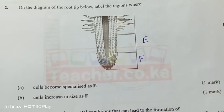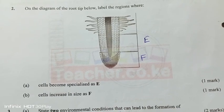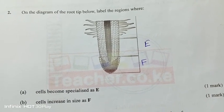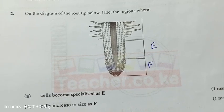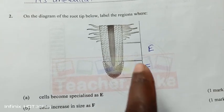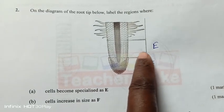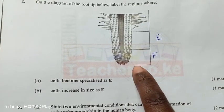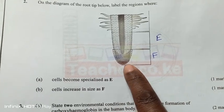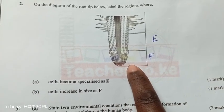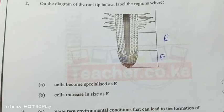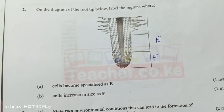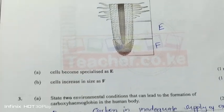On the diagram of the root tip, above the regions where cell becomes specialised — cell becomes specialised at region E, and the region of increase in size is region F, where cells are actively dividing.